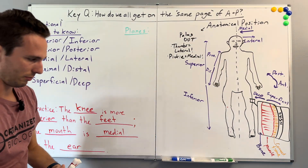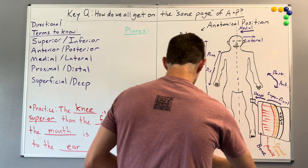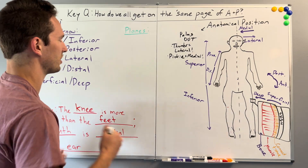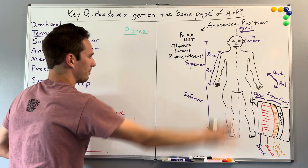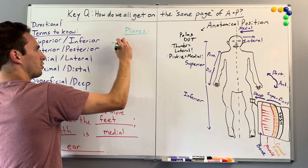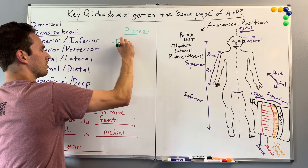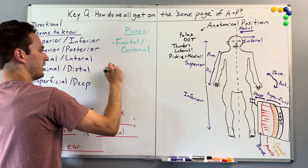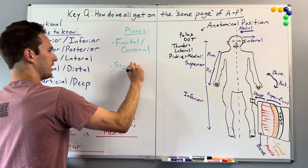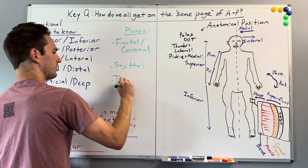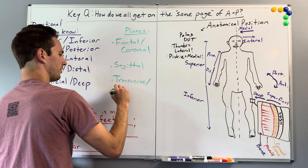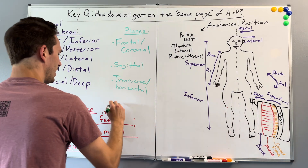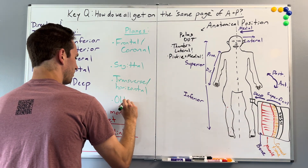Now let's go into planes — not the things that fly, but ways we can cut the body apart to understand it. The first is the frontal plane, also called the coronal plane. Then there's the sagittal plane. And then the transverse plane, also called the horizontal plane — sometimes called a cross-section. We can also have an oblique plane, but that's less common.